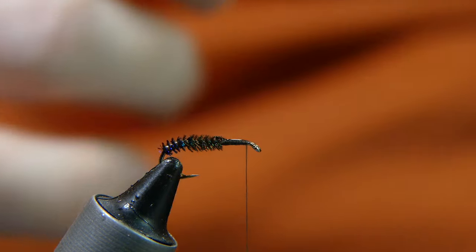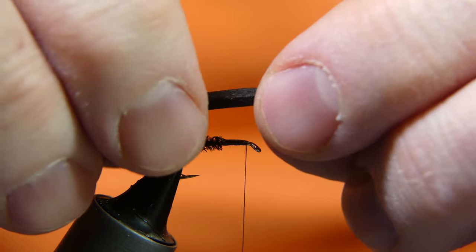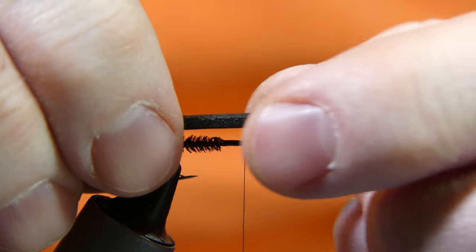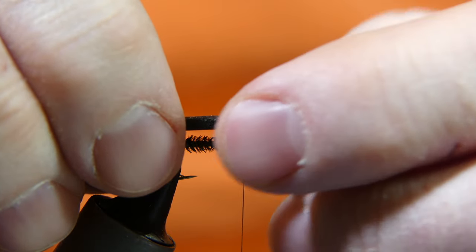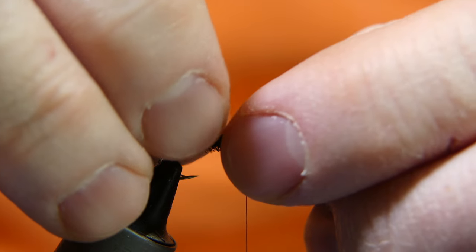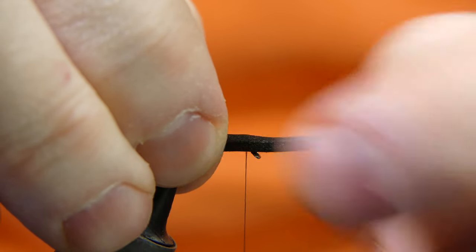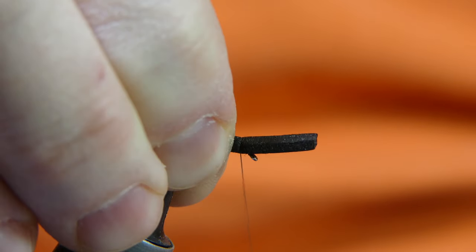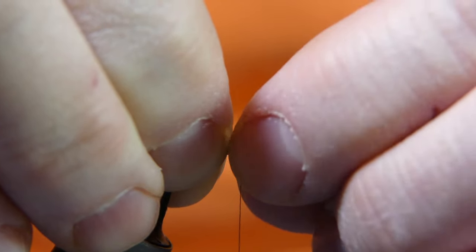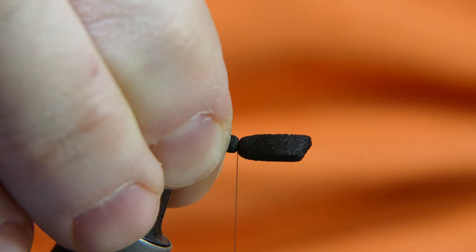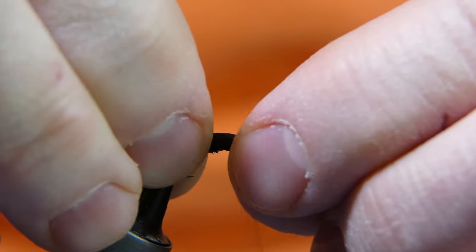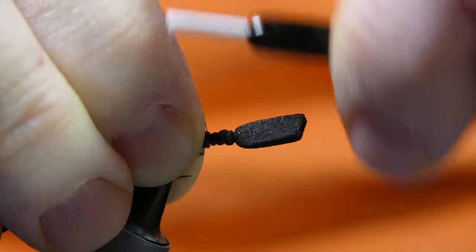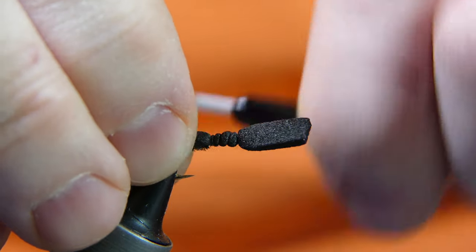Take this black foam, just lay it right past the eye. You're going to cut that off to length, so just make sure you have enough. Put it right on top and pinch it. Give it a wrap, nice loose wrap. Make sure everything stays on top of the hook and start wrapping backwards.